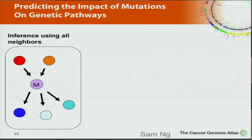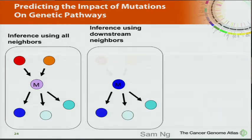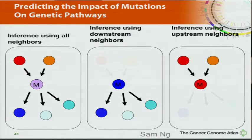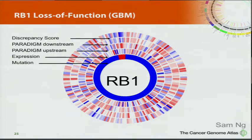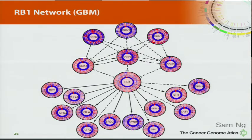Sam Ng has developed a clever method where you run the pathway analysis twice: once connecting a gene downstream to its targets to infer activity, and once connecting it to its upstream targets to infer activity, then look at the difference — what he calls the discrepancy. He showed a positive control for RB: the mutated cases show a lower discrepancy, corresponding to a loss-of-function event, and he showed the pathways surrounding these things.